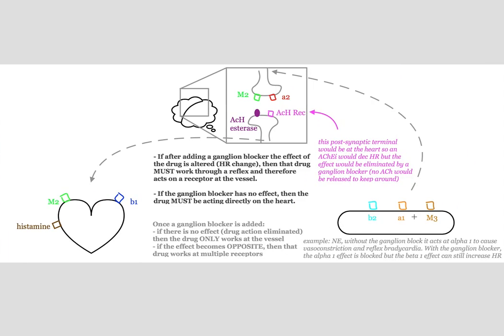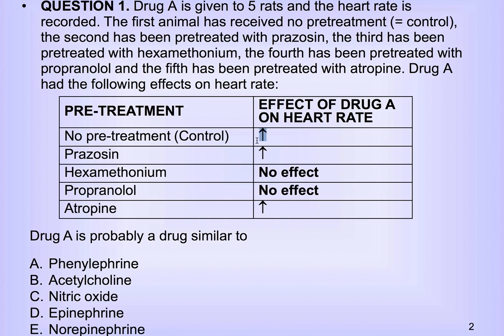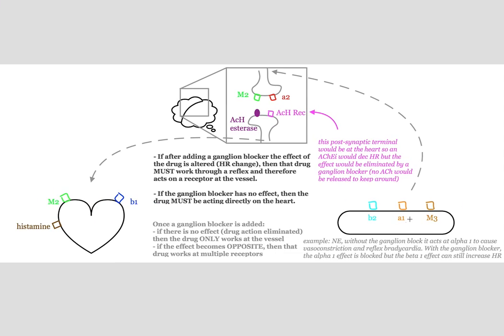If we know that this works through reflex, we're looking at one of these receptors, and if we know that it increases heart rate, we know that it has to be something that is the opposite — causing vasodilation — because it's going to work through the reflex to cause tachycardia to balance out the pressure. So we know that it has to be an M3 receptor or a beta-2 receptor that's activated.